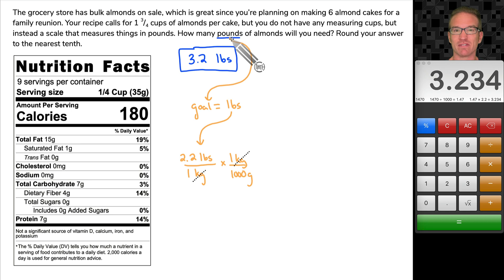We started off with pounds. That is what we're trying to find. So pounds goes at the top. 2.2 pounds is one kilogram. We don't want kilograms. We want grams so that we can bring in this 35. So I wrote down the conversion.